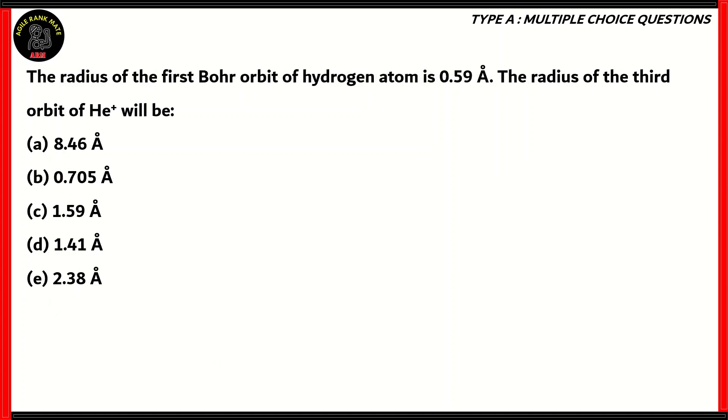Let's look at another question. The radius of the first Bohr orbit of hydrogen atom is 0.59 angstroms. The radius of the third orbit of helium plus will be: 8.46, 0.705, 1.59, 1.41, or 2.38 angstroms.